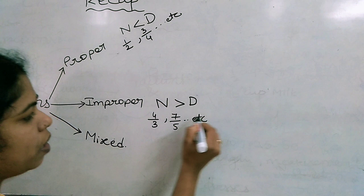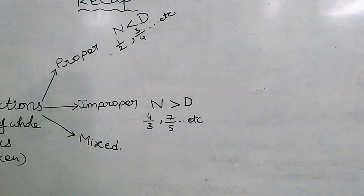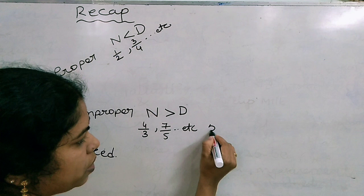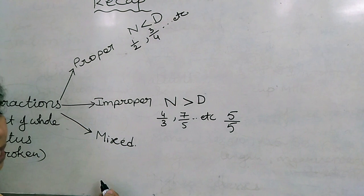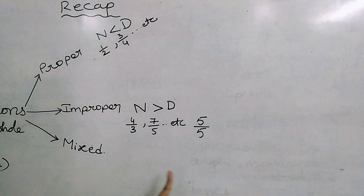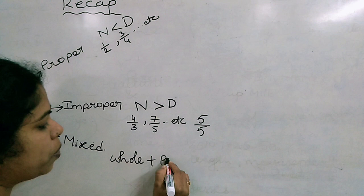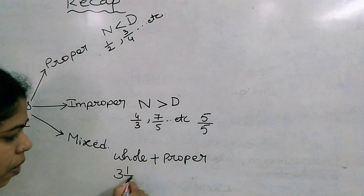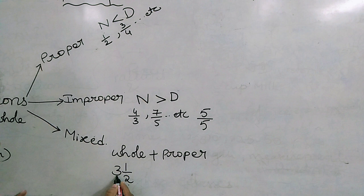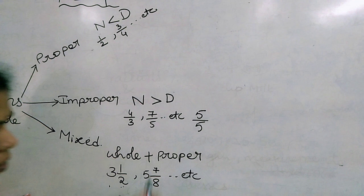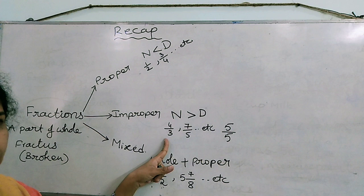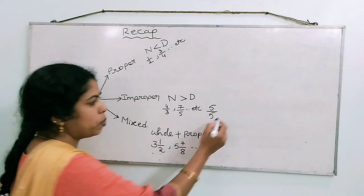If the numerator and denominator are both equal, we also call them improper fractions - for example, 5 by 5. Now, mixed fractions are a combination of a whole number and a proper fraction. Suppose the example 3 and 1 by 2: here 3 is the whole part and 1 by 2 is the proper fraction. A combination of these two gives a mixed fraction, like 5 and 7 by 8. Mixed fractions can also be expressed as improper fractions, and improper fractions can also be expressed as mixed fractions.